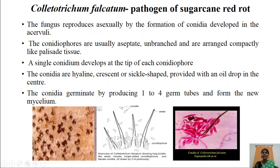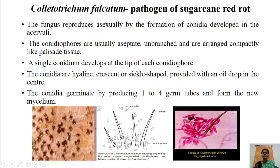Each conidium develops at the tip of the conidiophore. They are hyaline in nature and crescent shaped — meaning half-moon shape with two pointed ends — or sickle shaped, provided with an oil drop in the center. The conidia germinate by producing one to four germ tubes to form new mycelia of the fungus. Here we can observe the conidia cut down from single conidiophores — crescent-shaped conidia with oil drops.